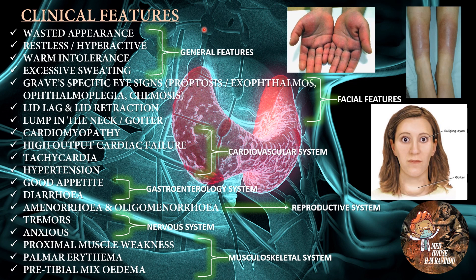Let's talk about the clinical features of hyperthyroidism. To understand and memorize easily, we can subdivide clinical features into general features, facial features, and features related to the cardiovascular, gastroenterology, reproductive, nervous, and musculoskeletal systems. General features are wasted appearance, restlessness or hyperactivity, warmth intolerance, and excessive sweating. Facial features are Graves' specific eye signs like proptosis or exophthalmos, ophthalmoplegia, and chemosis, also lid lag and lid retraction, and a lump in the neck or goiter.